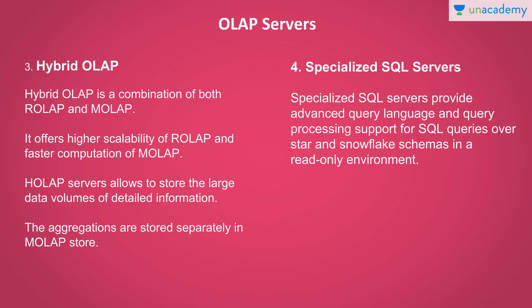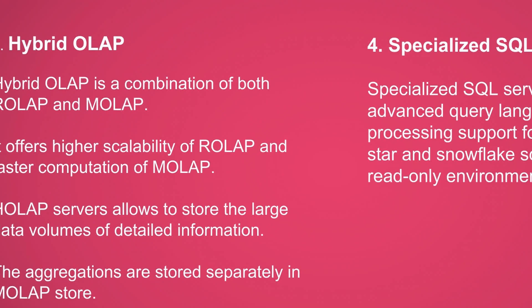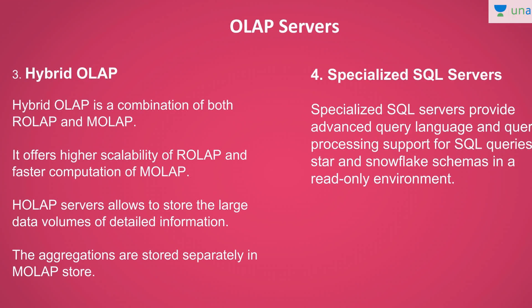Hybrid OLAP is a combination of both Relational OLAP and Multidimensional OLAP. It offers much better scalability than Relational OLAP and faster computation than Multidimensional OLAP. A Hybrid OLAP server always allows us to store huge amounts of data, with all data stored in separate aggregations.